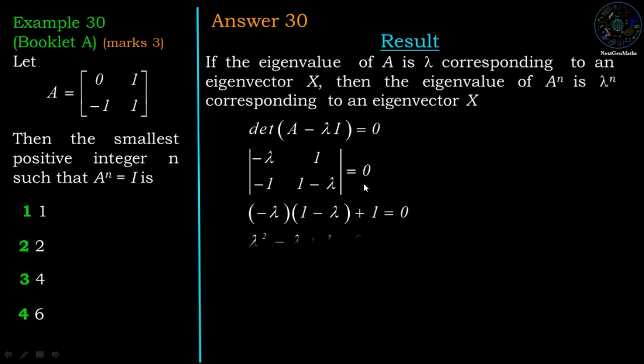Now, for the corresponding characteristic equation lambda square minus lambda plus 1 equal to 0. The roots are, because it is a quadratic equation, we know the method to find the roots of the quadratic equation. This is the delta method: minus b plus or minus square root of b square minus 4ac divided by 2a.